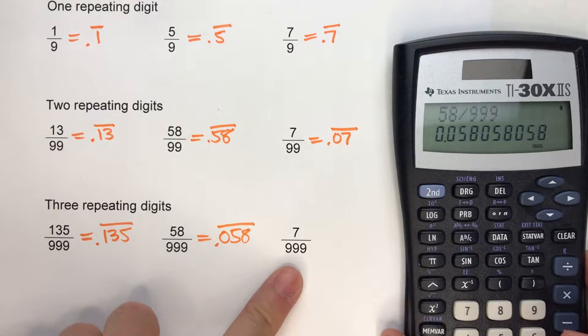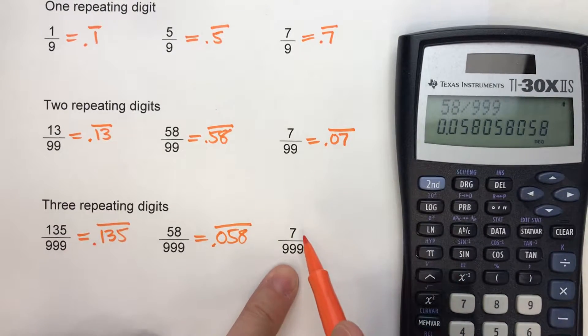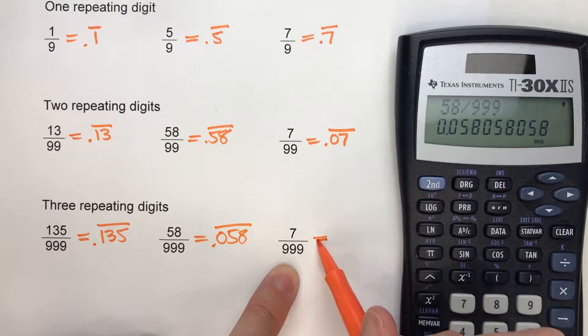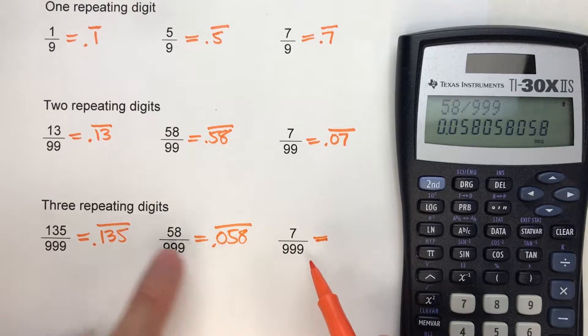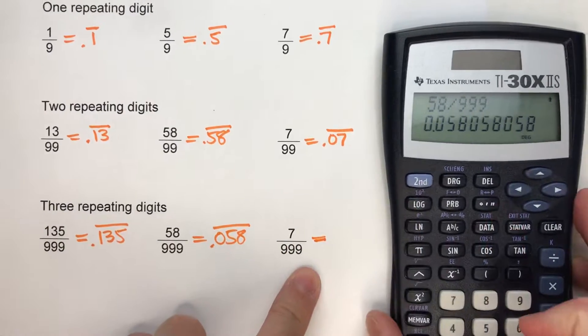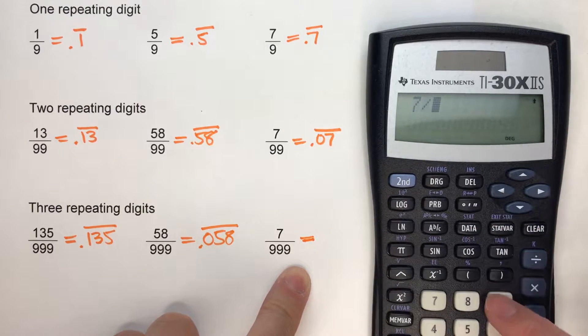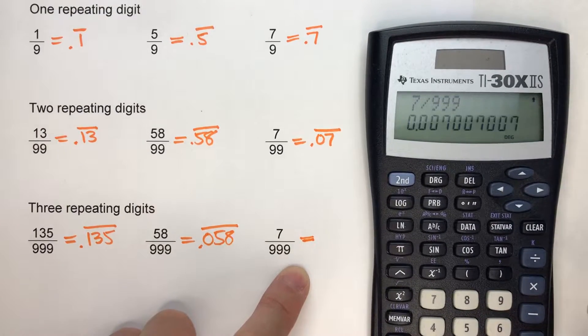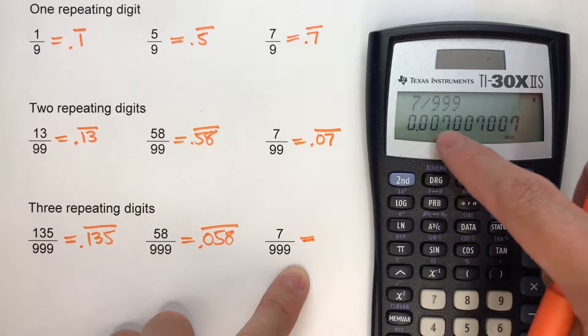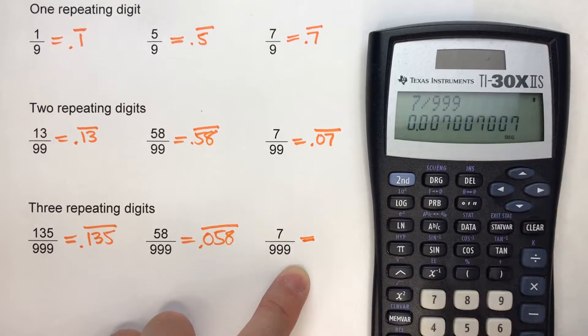And then 7/999. Now this time the numerator only has one digit. But remember, the denominator is 999, which means there's three repeating digits. So what do you think is going to end up repeating? Well, it has to have three digits. So 007, 007, 007.